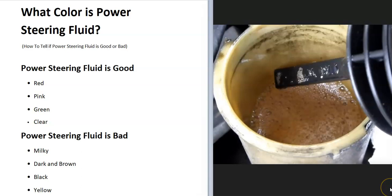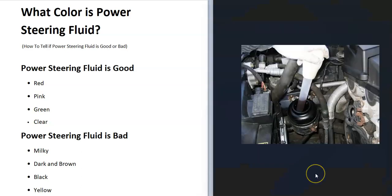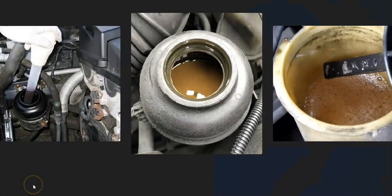If the fluid looks milky, like a dark brown color, or if it's black or even a really yellowish color, then that's no good and it's time to replace it. Any of those colors—dark black, dark brown, milky, or yellowish—would indicate that the power steering fluid is bad and needs to be changed out.